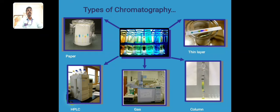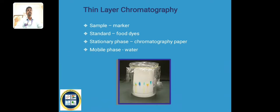Now we move to the special one: thin layer chromatography. Here the sample plays a major role. We can see blue, yellow, and pale green colors, which are dyes available in food factories and dye factories. The important sample here is the dye molecule, and sometimes we use color markers and painting markers.